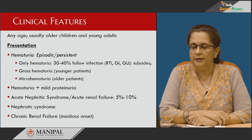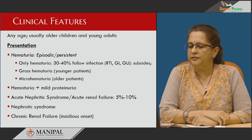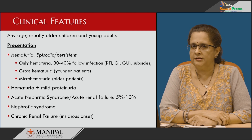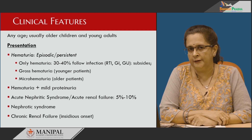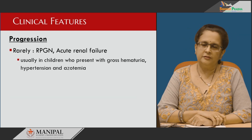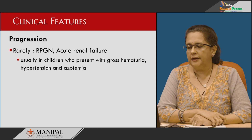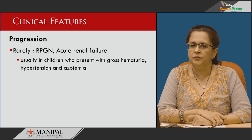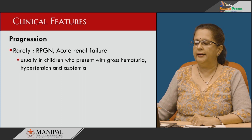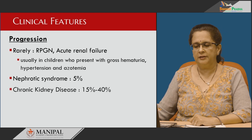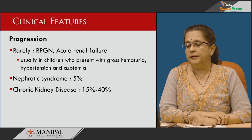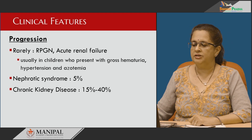Occasionally, it can present as nephrotic syndrome, and most of these patients can progress to chronic kidney disease, or it could present as chronic kidney disease when earlier symptoms have been very mild — an insidious onset. Patients can rarely progress to rapidly progressive glomerulonephritis or acute renal failure, especially in children with gross hematuria, hypertension, and azotemia. Nephrotic syndrome is seen in only 5 percent of patients, and chronic kidney disease progression occurs in 15 to 40 percent of individuals with IgA nephropathy.